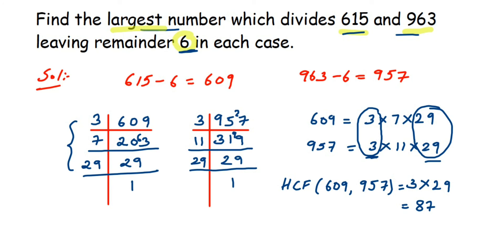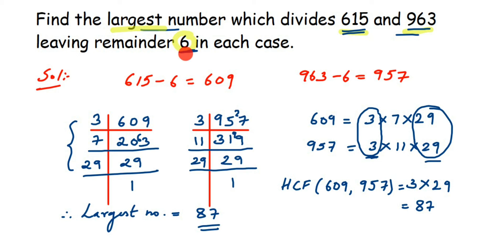So the largest number that divides 615 and 963 is 87. You can verify this: divide 615 by 87 and you'll get a remainder of 6. So whenever a remainder is given in the question, subtract it first and then find the HCF. I hope this is clear — if you have any questions or doubts, leave a comment. Thank you so much for watching.